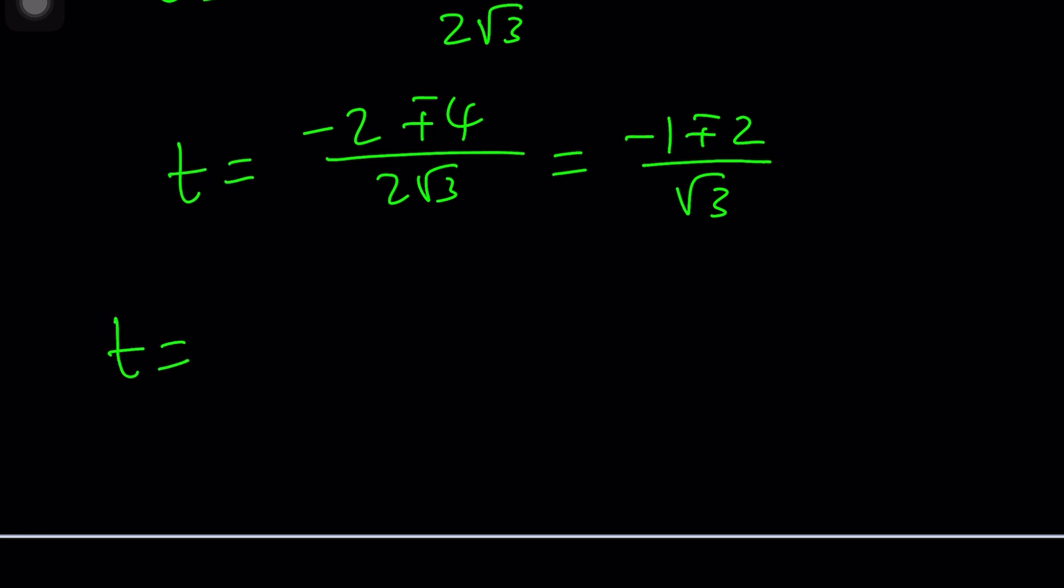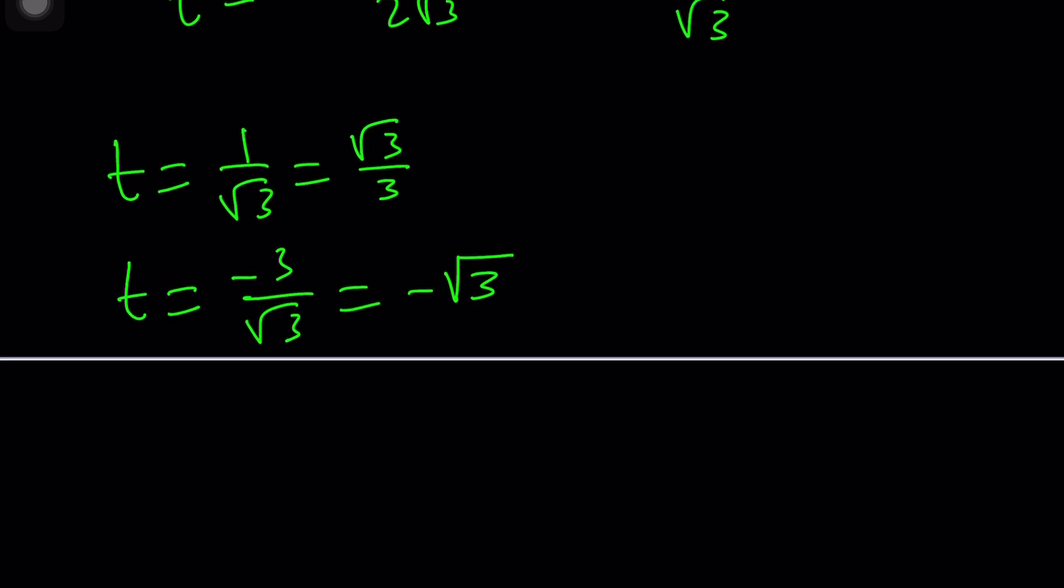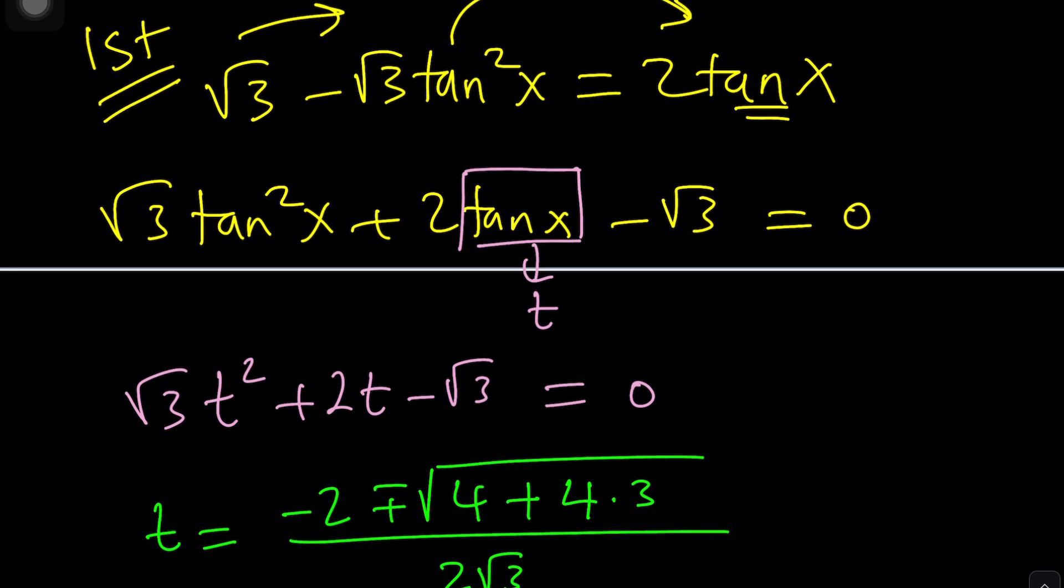And root 3. And now this should give us the following values. t can be 1 over root 3 which is root 3 over 3. And the other t value is going to be negative 3 over root 3 which is negative root 3. Because root 3 times root 3 is 3 right? Cool.